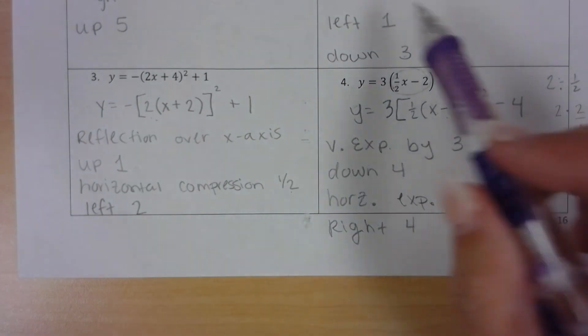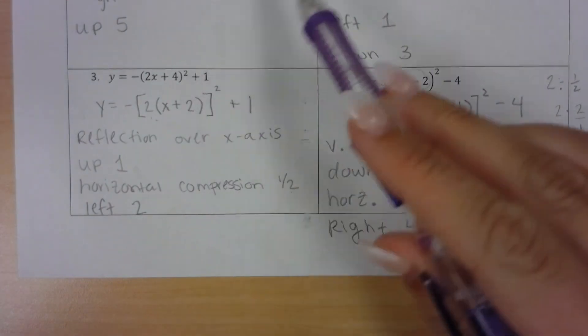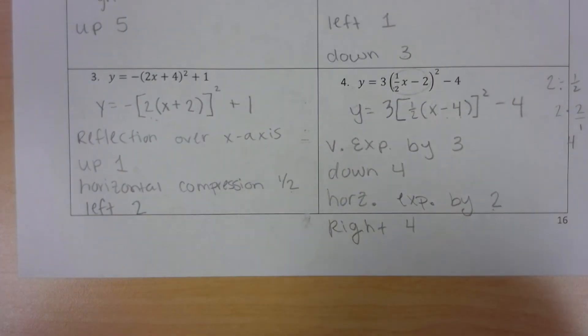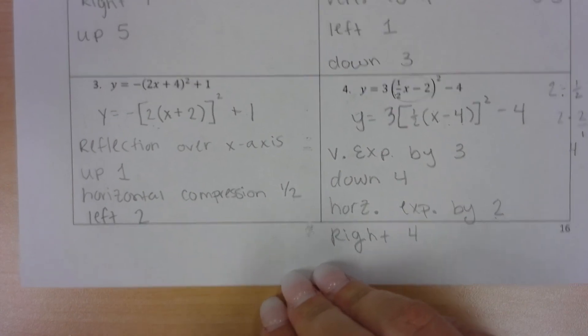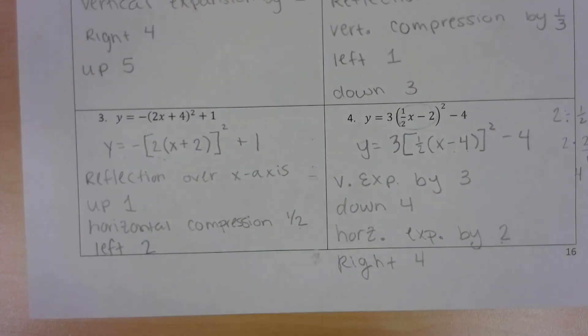So the reason we're going over this is because now we're going to do this exact same stuff, but with sine, cosine, tangent, cosecant, secant, and cotangent. But all of this you're going to have to remember from algebra 2. So that's just a quick little reminder of how we do our transformations from algebra 2.